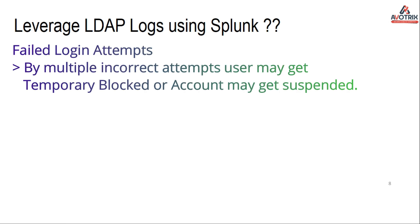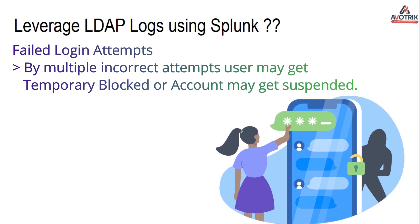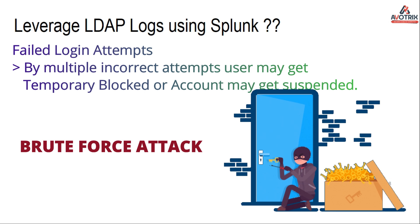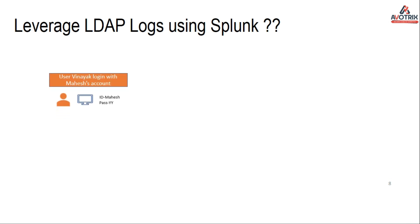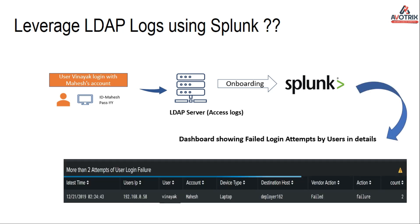Now we will see an illustration of failed login attempts made by users entering incorrect ID or password. With multiple incorrect attempts, a user may get temporarily blocked or their account may get suspended, similar to a brute force attack. Organizations need to review these locked accounts frequently so that users can work uninterrupted and malicious activity can be monitored. We have user Vinayak who attempted to log in with Mahesh's user account but entered a wrong password. Using LDAP with Splunk, the dashboard shows failed attempts with respect to number of times and user ID. An alert can also be set up so that whenever failed attempts by one user exceed a threshold, the user account gets locked and an alert goes to the concerned team to unlock the account.